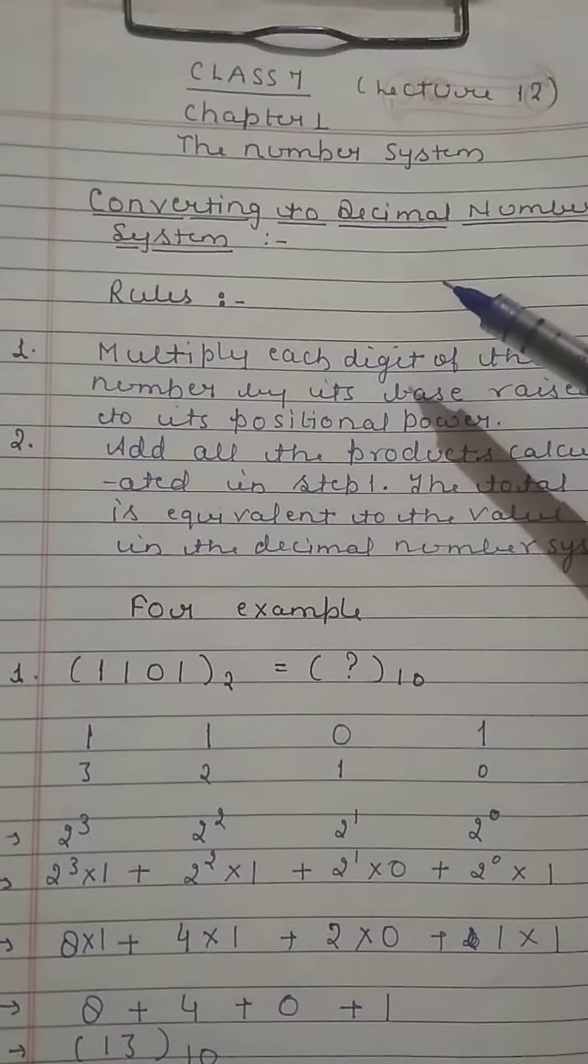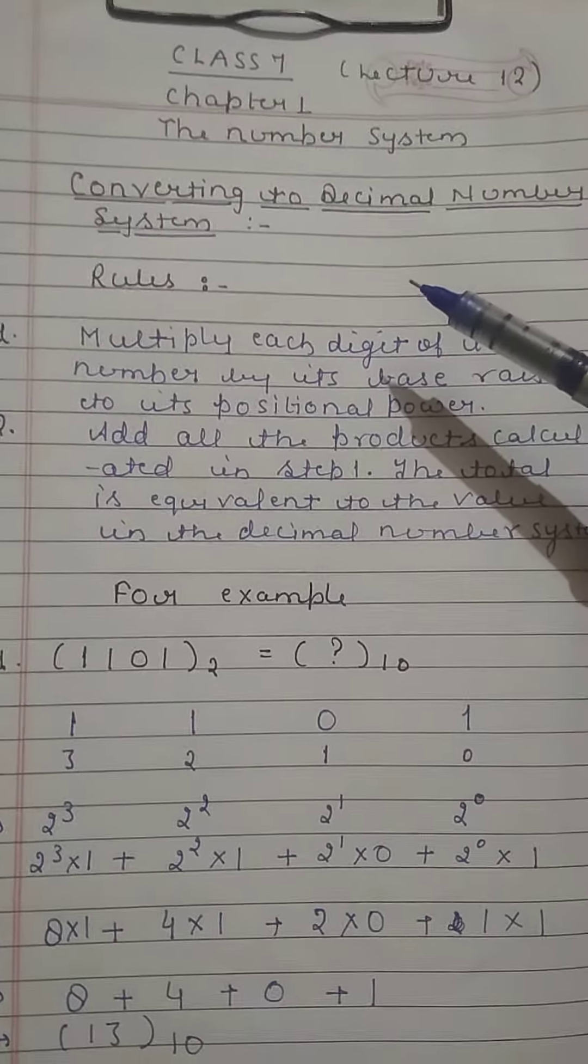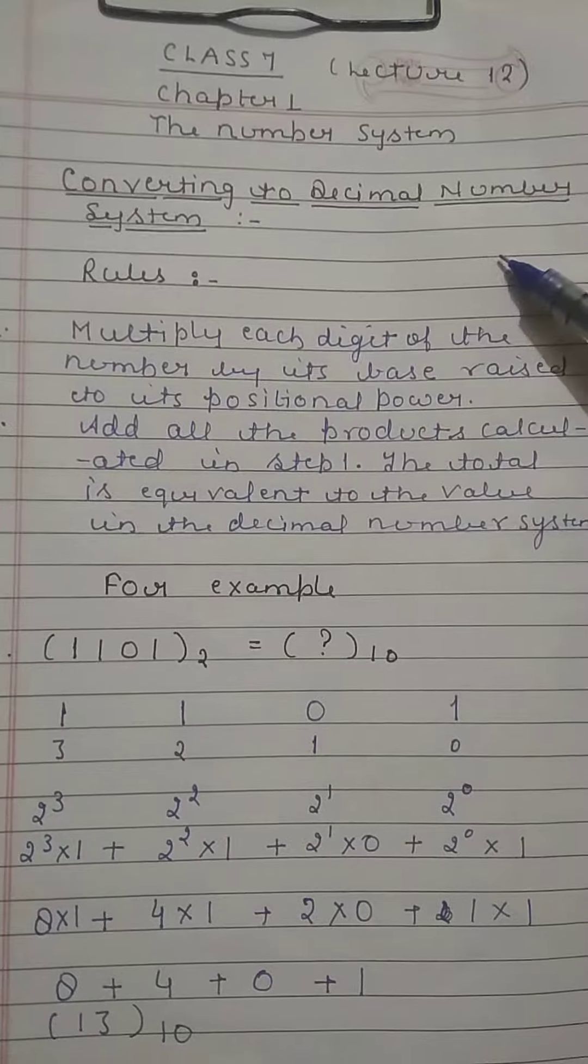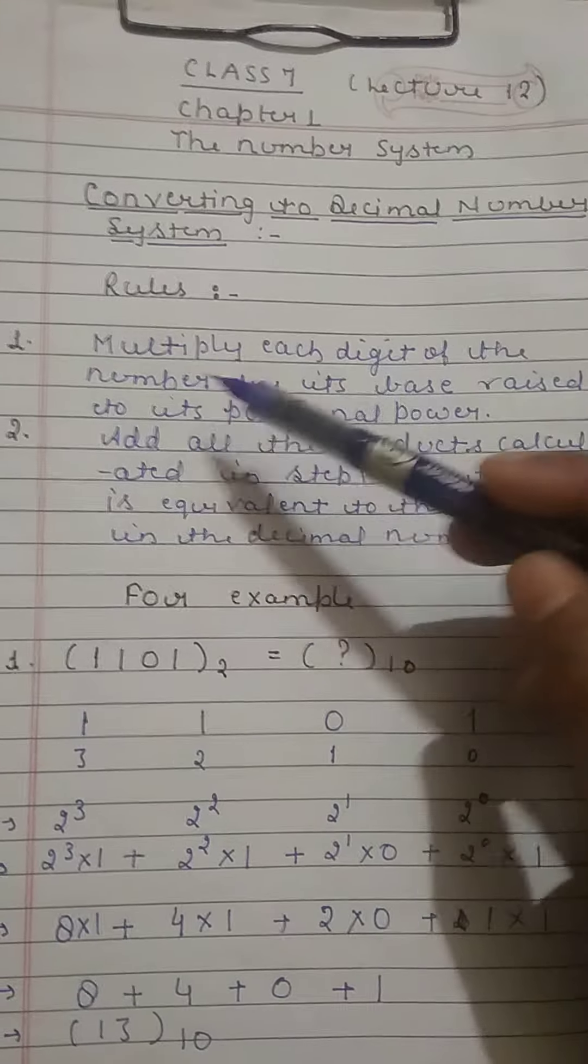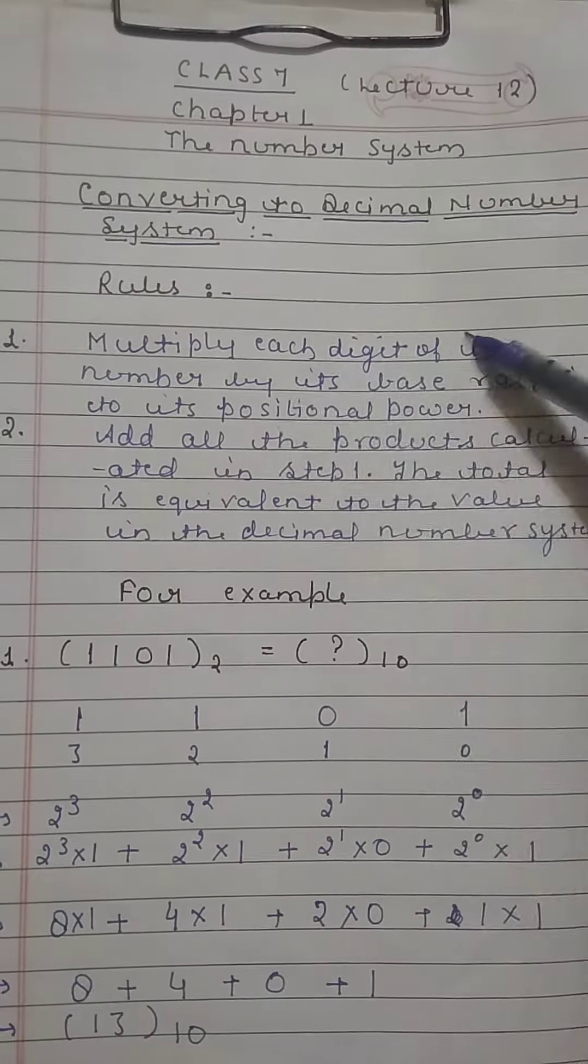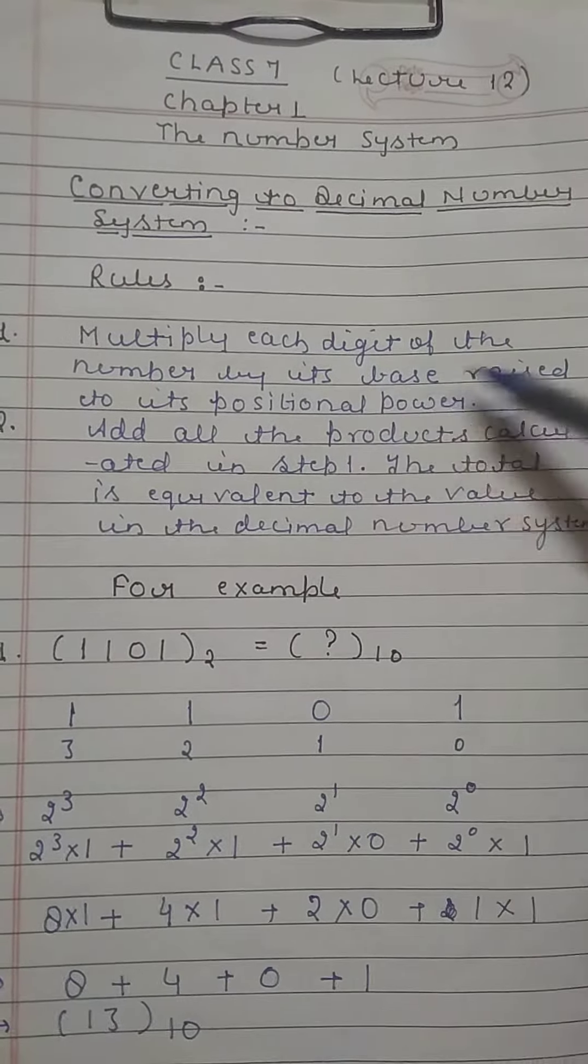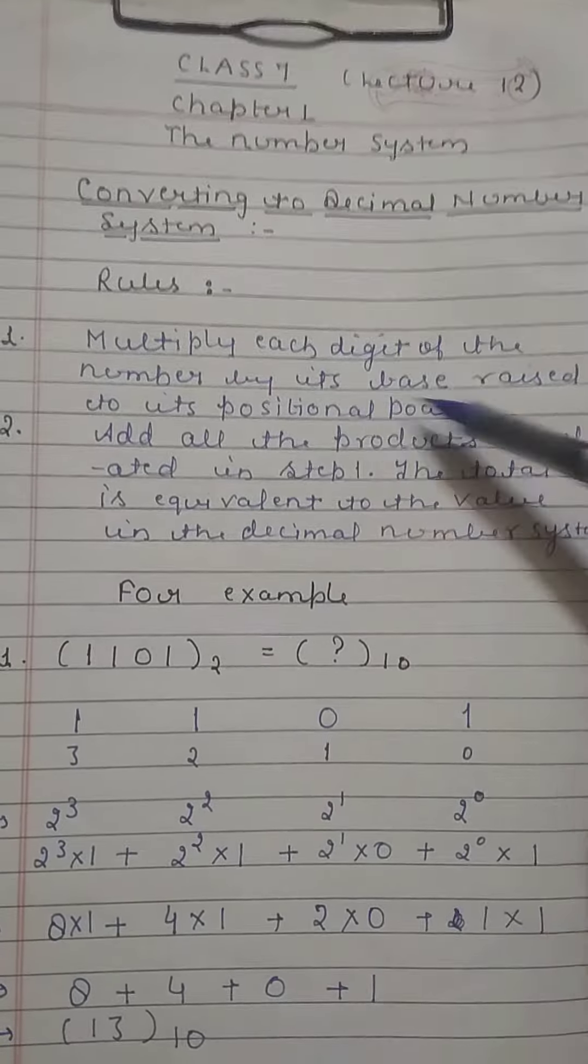To convert other number systems such as binary or octal to decimal number system, we need to follow the following rules. The first one is: multiply each digit of the number by its base raised to its positional power.